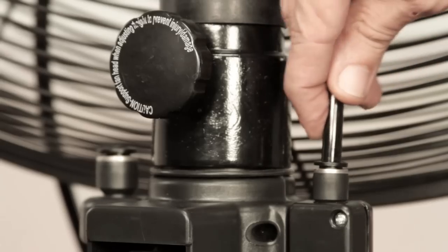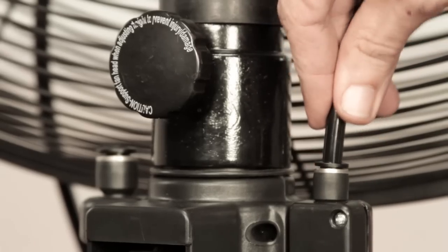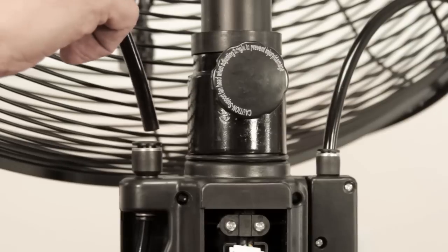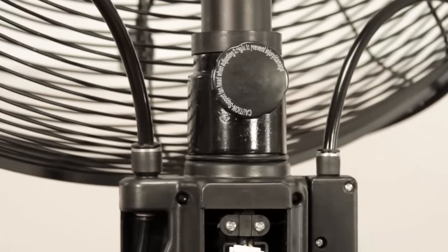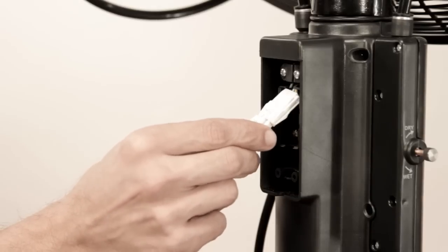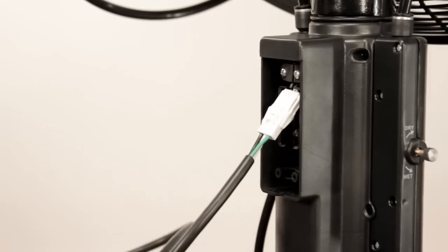Step 13. Connect the air tube and water tube to the connectors on the misting fan pole assembly by pushing the tubes all the way into the corresponding connectors. Make the electrical connection between the Brisa motor head and the fan pole assembly.